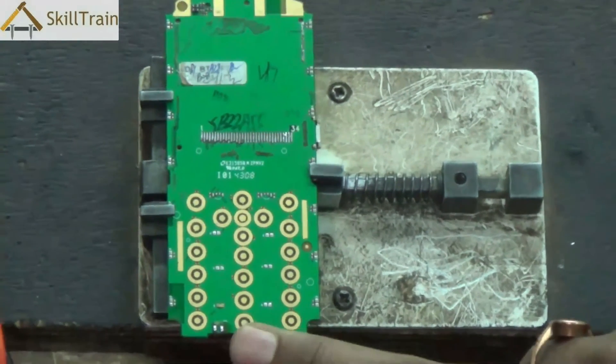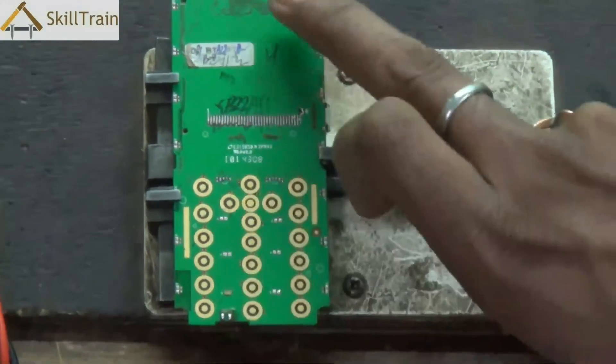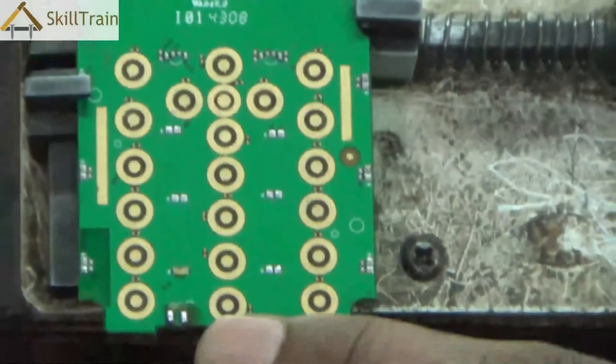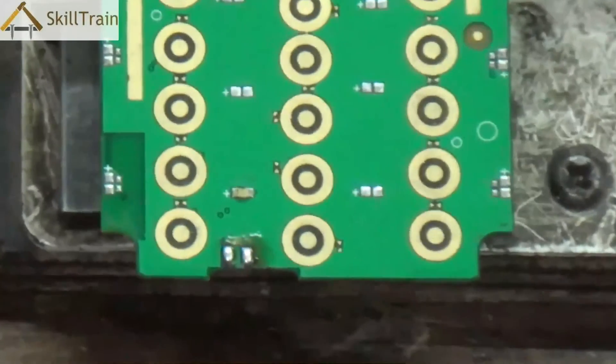In the board, in the bottom if you see there will be two points there. This is called the microphone tip and we have seen it in earlier PCBs also. It's in the bottom portion of the mobile.